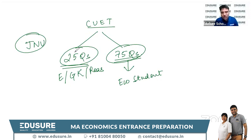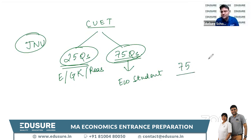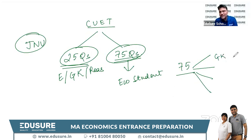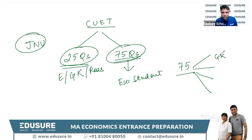Now let's understand the pattern of these 75 questions. Based on the CUET 2021 paper and the sample paper, these 75 questions are divided as follows: first, approximately 15 to 20 questions will come from General Knowledge — that is approximately 30 to 35 percent of the paper.